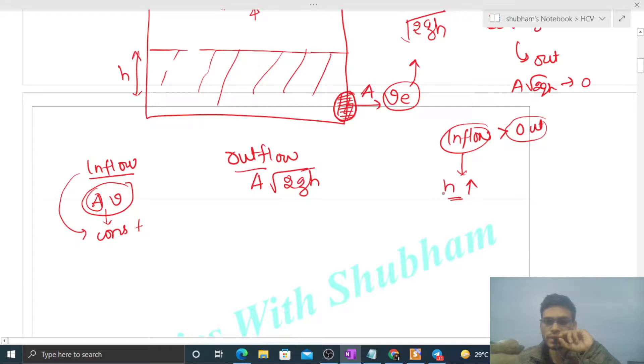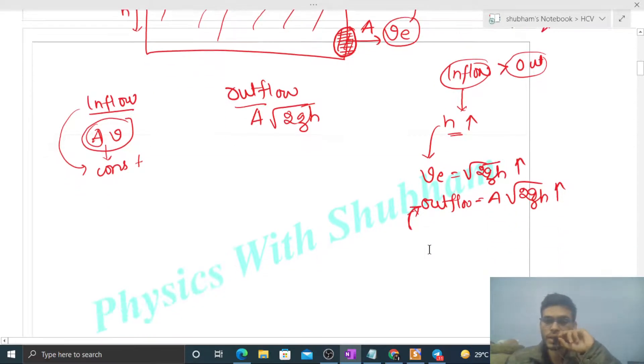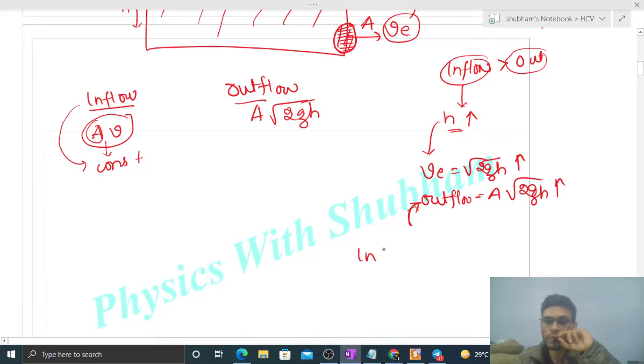Now if h increases, then velocity of efflux, that is square root of 2gh, that increases. It means outflow, which is area into square root of 2gh, this also increases.